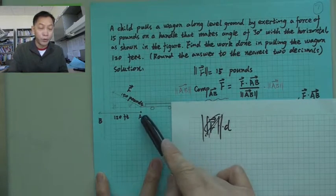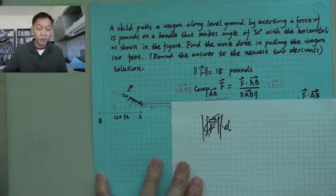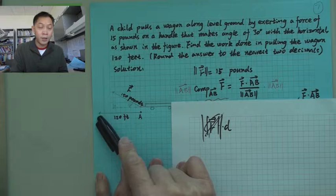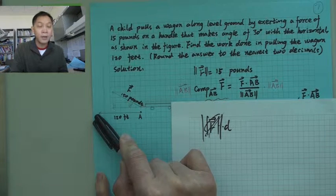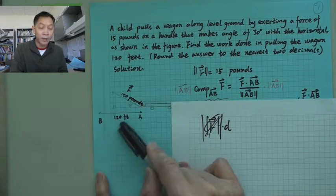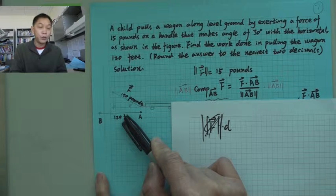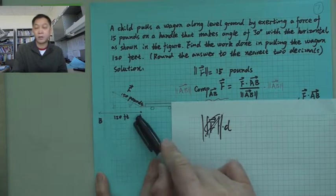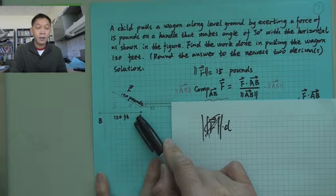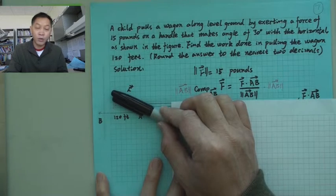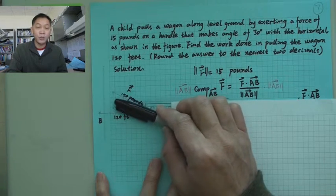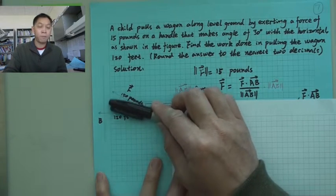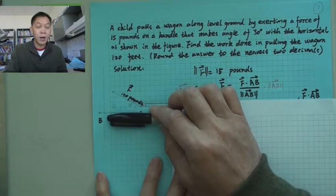We don't review 120 as a plain number; instead, the object moved from point A to point B in the horizontal direction with magnitude 120. Both displacement and force are vectors — they have direction and magnitude. So force F has a projection on AB.